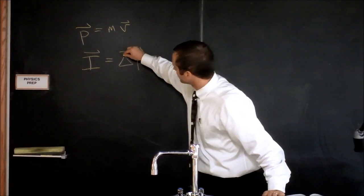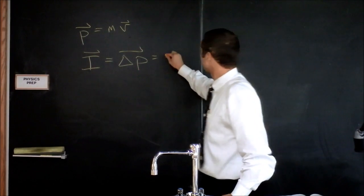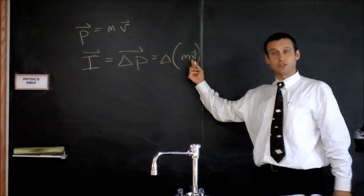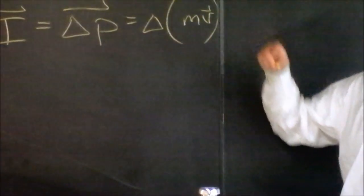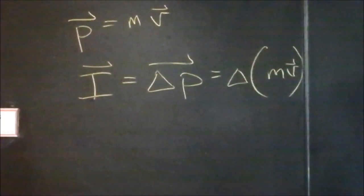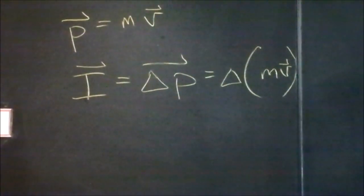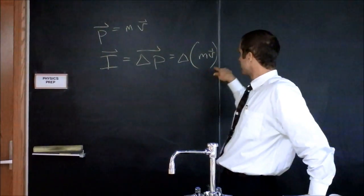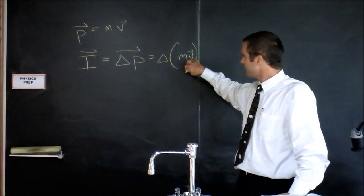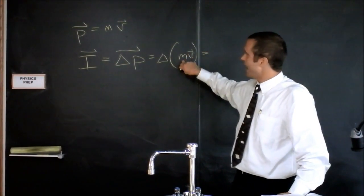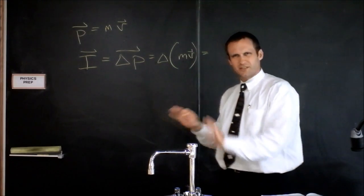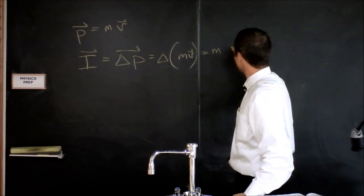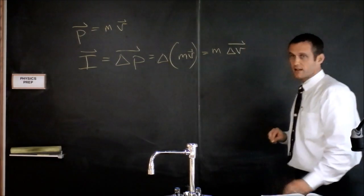It's pretty cool, but let's write this out. If we assume delta means change, and momentum represents two things — m times v — both of these things could change in principle, so we have to be careful. Which one do you think is going to be changing? Probably the velocity. Let's assume that the only thing changing is the velocity, so we can take m out of the delta — m times delta v, change in velocity.